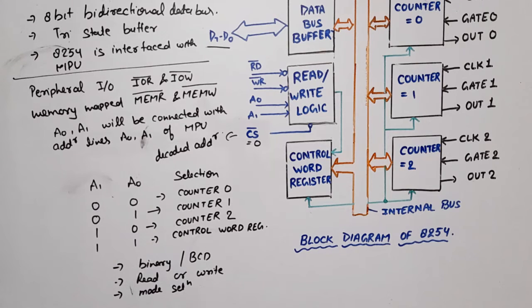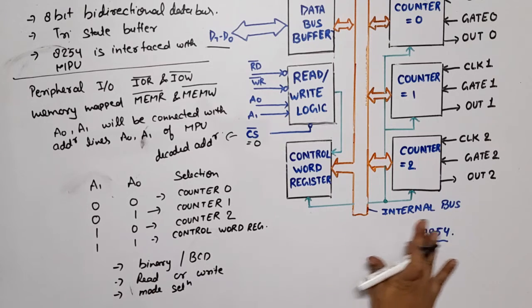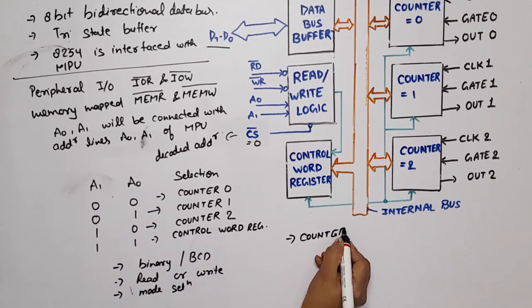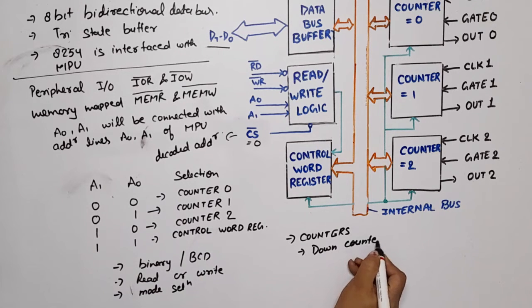Now we will talk about counters. So I have told you that this counter, you can see here that there is 3 counters. These are the first counters. Now which type of counters are, they are down counter. They will have two inputs, clock or gate, and one output.